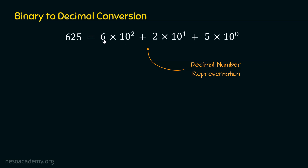Here, 6 is multiplied by 10 to the power 2, which means 6 multiplied by 100, giving 600. 2 multiplied by 10 to the power 1 gives 20. And 5 multiplied by 10 to the power 0 — which is 1 — gives 5. So we get 600 plus 20 plus 5, which equals 625. This is the decimal number representation of 625.